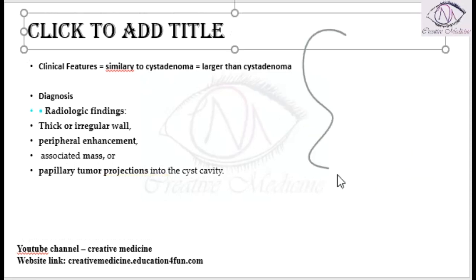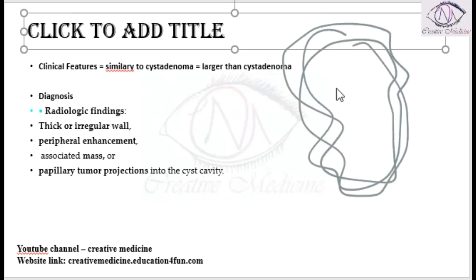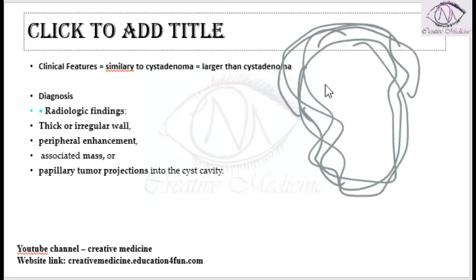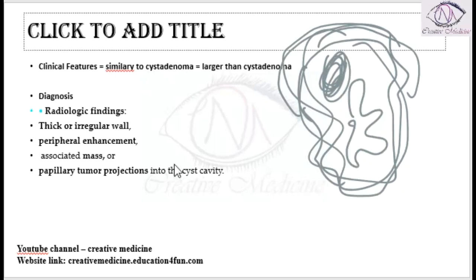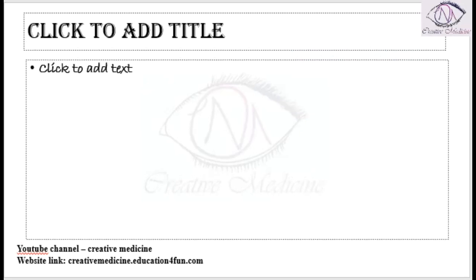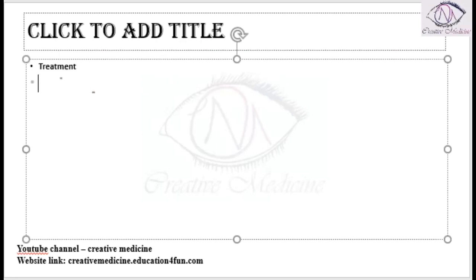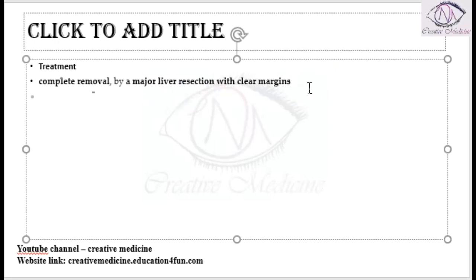You will see a thick irregular wall with peripheral enhancement, and this is also associated with mass papillary projections into the cyst cavity. The treatment is complete resection — complete removal of the tumor should be done by major liver resection with clear margins. The survival rate of biliary cystadenocarcinoma is around 25 to 100 percent at 5 years.